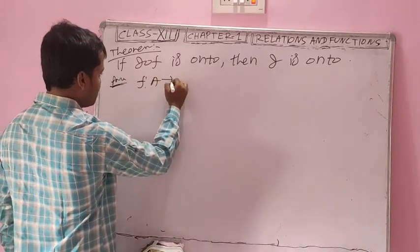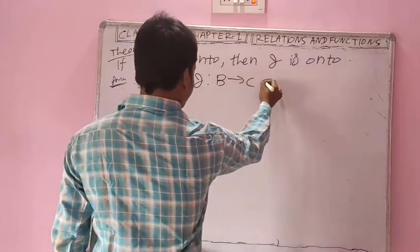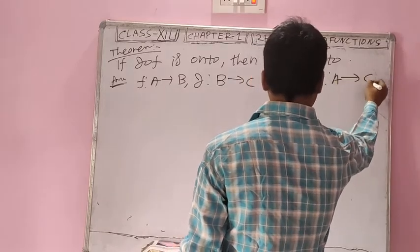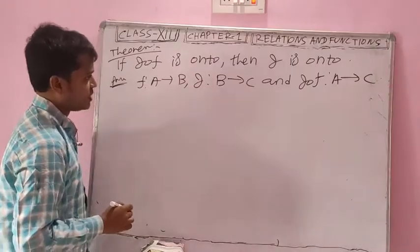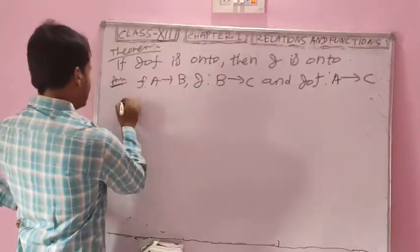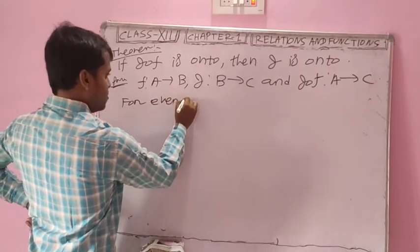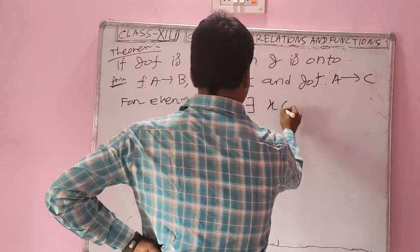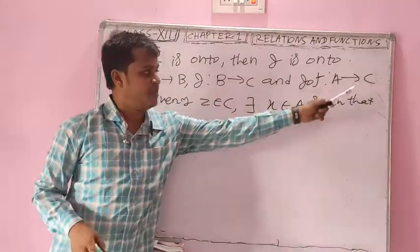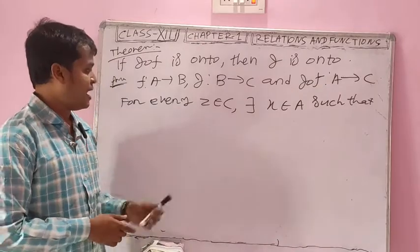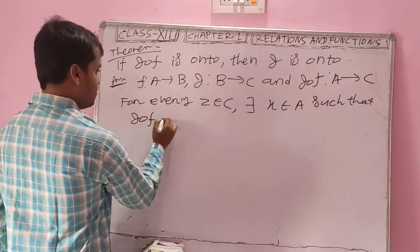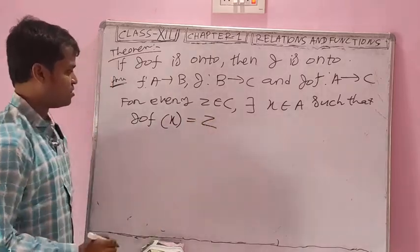Similarly, let f be a function from A to B, g be a function from B to C. Then g∘f is a function from A to C. We have to prove g is onto. Since g∘f is onto, by definition: for every z belonging to C, there exists x belonging to A such that g∘f(x) = z.